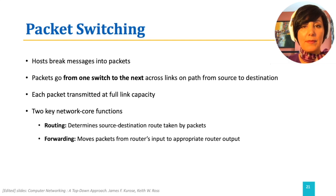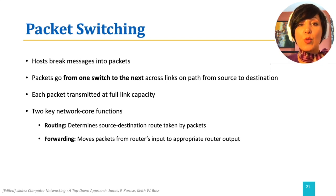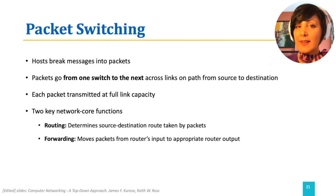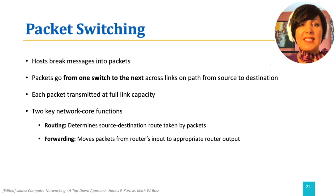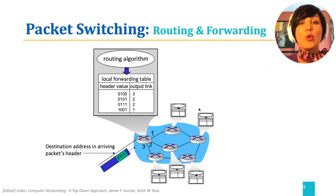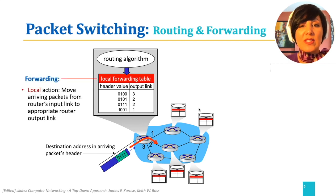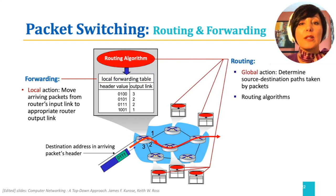Let's do another comparison example. Say Alice wants to deliver a package from her home to Bob's home. She uses a map to find a path to Bob's home, determining the whole path — which roads to take and where to turn. This is similar to routing. However, at each intersection, she needs to decide to turn left, turn right, or go straight — that is similar to forwarding. These decisions at turns are based on the overall path, similar to forwarding decisions based on tables calculated during routing by running a routing algorithm. Forwarding is a router's local action, moving arriving packets from a router's input to its output. Routing is a global action, determining the source-to-destination path taken by packets.